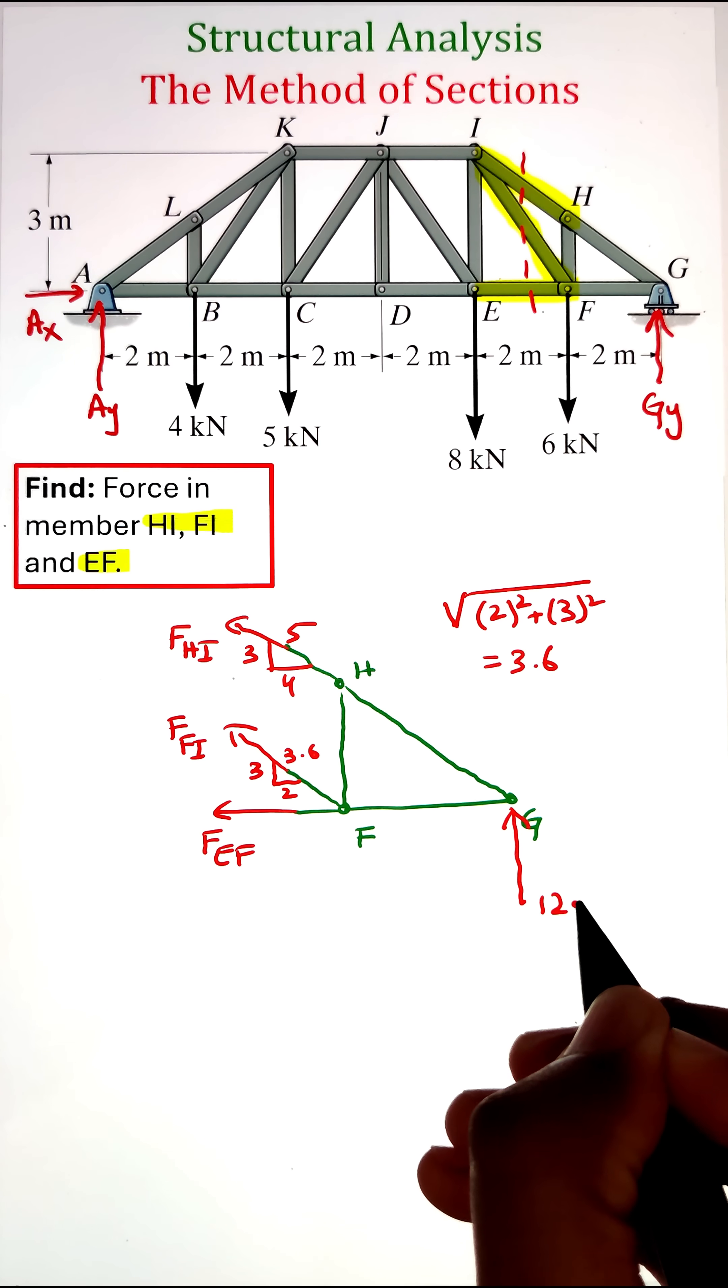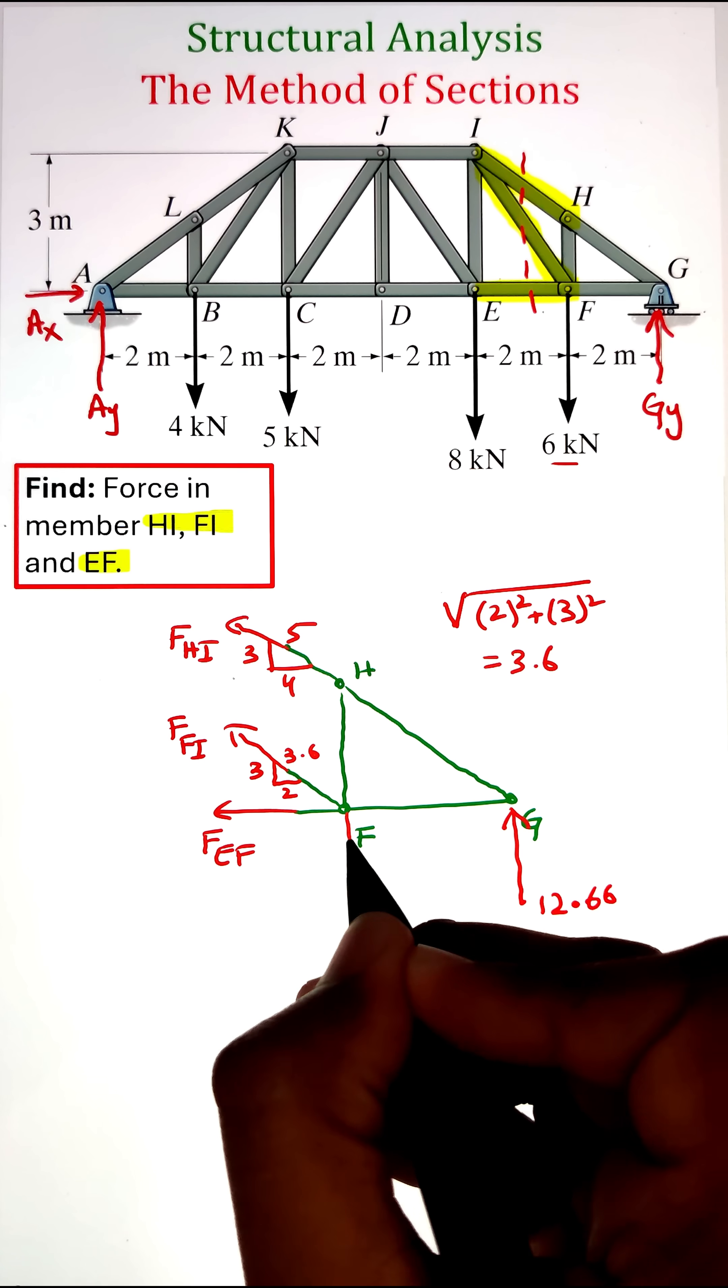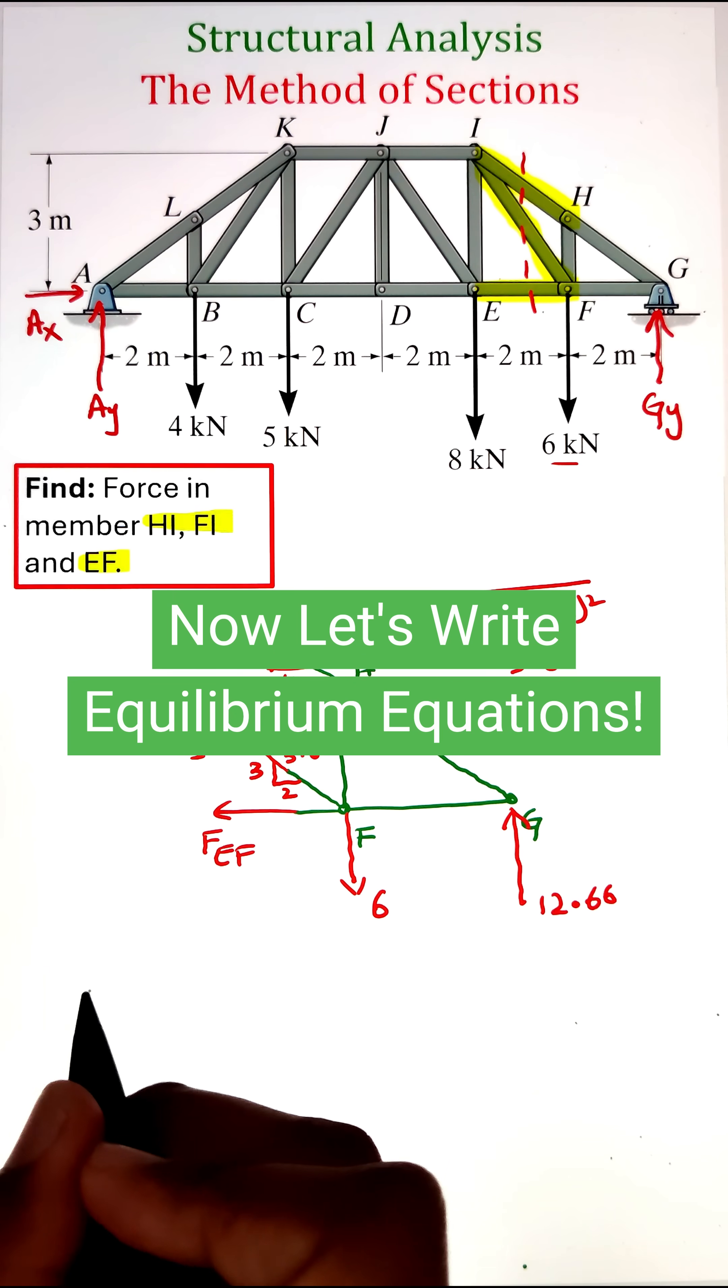Since everything has been identified, let's write the equilibrium equations. I can start by writing the summation of moments at point F equals zero, taking counterclockwise as positive.